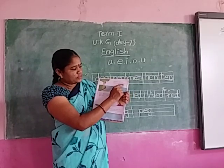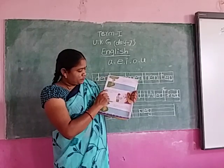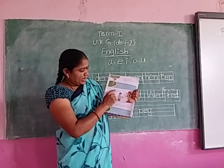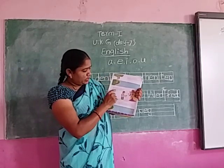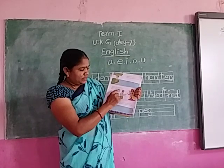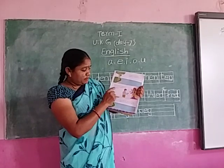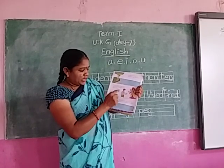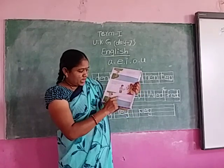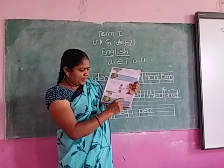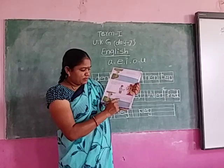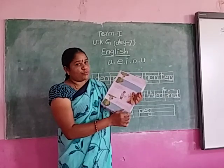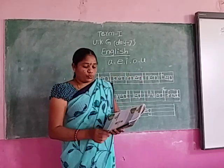The greedy friend then dropped his axe into the river. The fairy again brought out a golden axe. The greedy man tried to take it. The angry fairy went away. The greedy man lost his own axe also.